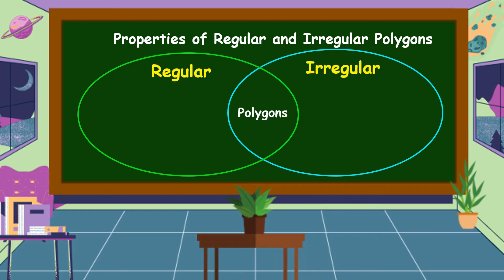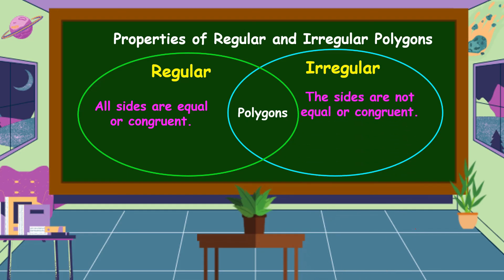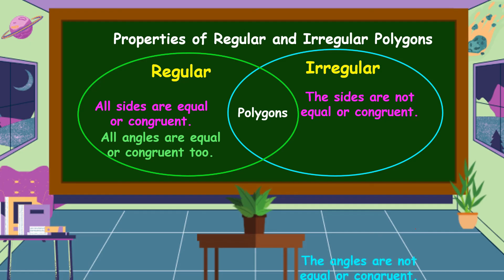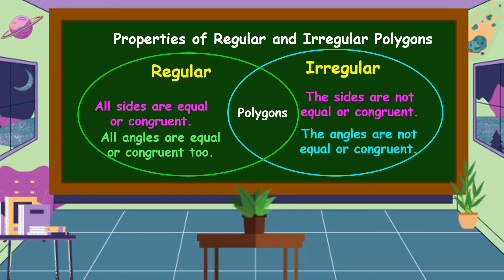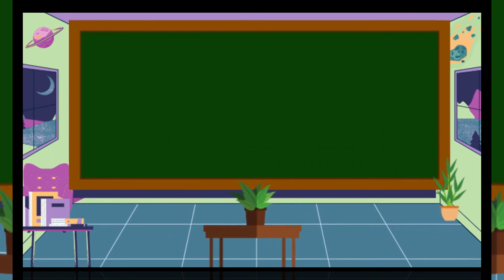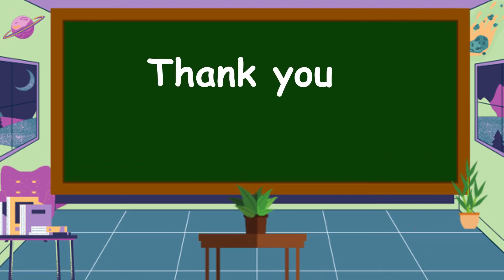These are the properties of regular and irregular polygons. For regular polygons, all sides are equal or congruent, and all angles are equal or congruent. For irregular polygons, the sides are not equal or congruent, and the angles are not equal or congruent. I hope you understand our lesson for today — thank you for watching!